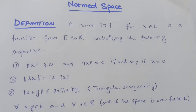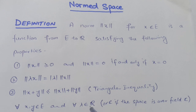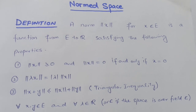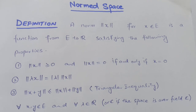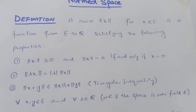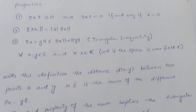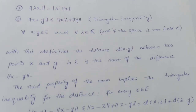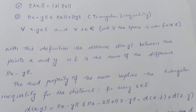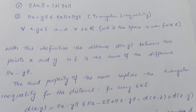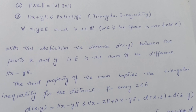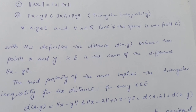These three properties form a semi-norm. Here x and y are members of E — that is, they are vectors — and λ is a scalar. The field may be real or complex numbers. With this definition, d(x, y) between two points in E is the norm of the difference, i.e., d(x, y) = ||x − y||.